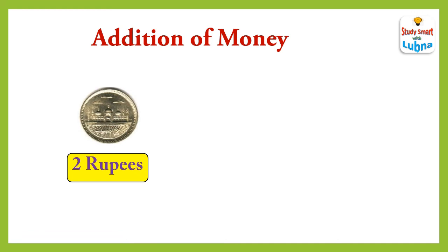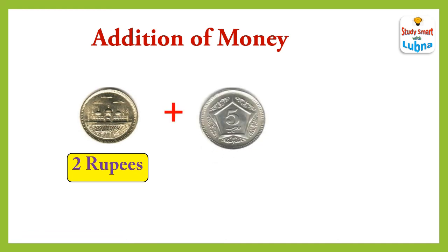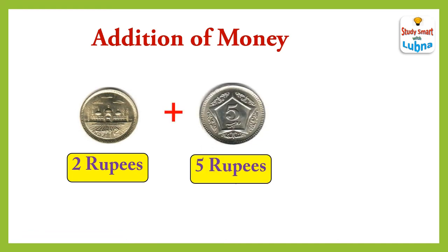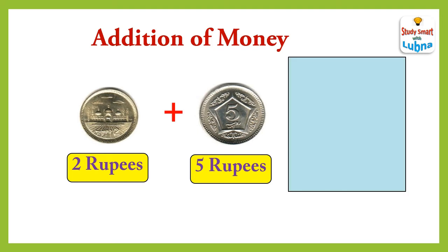When we add 2 rupees coin with 5 rupees coin, what will we get? Let's see. Rupees 2 plus rupees 5 — after adding them, we will get rupees 7.